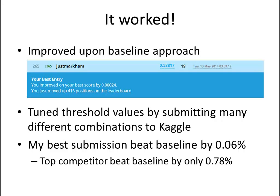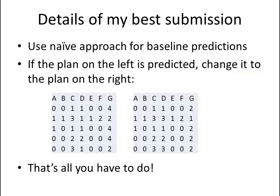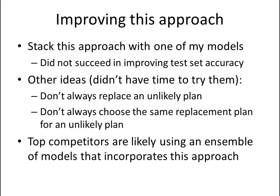I went to work tuning my three threshold values and submitted many different combinations to Kaggle. My best submission beat the baseline by 0.06% — and that's not a typo, it's 0.06%, not 6% — and even the top competitor was only beating the baseline by 0.78%, proving this is a very challenging problem. The best submission simply starts with the naive baseline predictions and then, if a predicted plan matches any one of five specific plans, replaces it with the plan on the right. Note that this approach completely ignores all the modeling and feature engineering work done up to this point. I also tried stacking this approach with one of my existing models, but that didn't succeed in improving test set accuracy.